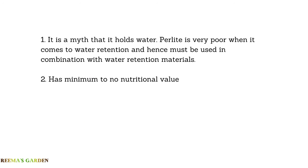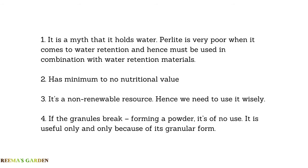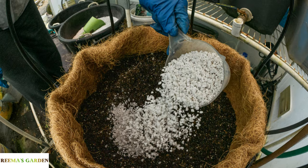Also, while perlite's pH neutrality is an advantage, it also means it has almost no nutritional value. Obsidian is a non-renewable resource, so we need to use it wisely — especially since there are alternatives to perlite, and we should use it only if necessary. Another key disadvantage is that the granules break down into powder over time, and once in powder form, perlite is of no use. It is only useful as long as it remains in granular form, and that breakage is inevitable.